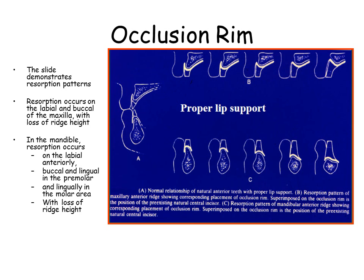The slide demonstrates resorption patterns and lip support provided by the rim. Resorption occurs on the labial and buccal of the maxilla, with loss of ridge height. In the mandible, resorption occurs on the labial anteriorly, buccal and lingual in the premolar area, and lingually in the molar area, with loss of ridge height.